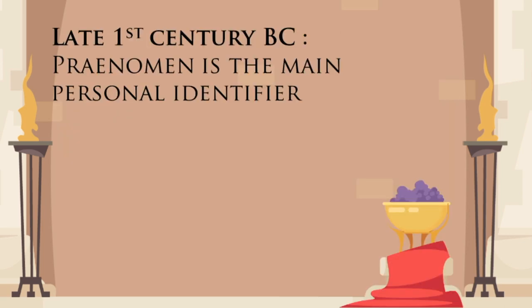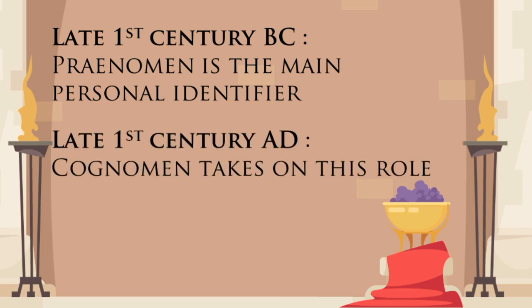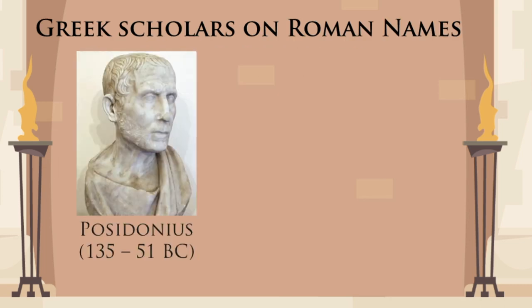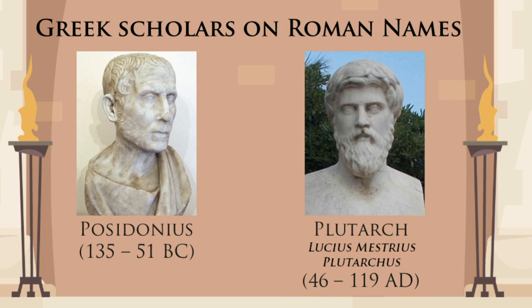This shift from praenomen to cognomen as the main personal name did not happen overnight, but by the end of the first century AD it was pretty much a done deal. This is best illustrated by the observations of outsiders. Greek philosopher Posidonius, writing in the first century BC, warns his countrymen that despite the fact that Greeks in the empire used cognomen as the personal distinguisher, for native Romans the praenomen is still the personal name. But the historian Plutarch — Lucius Mestrius Plutarchus, by the way — writing in the late first century AD, mocks Posidonius for thinking that. If that were true, argues Plutarch, then women wouldn't have had a personal name at all — and that doesn't really seem plausible.